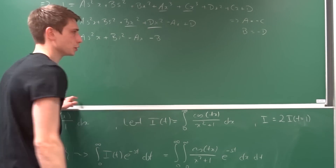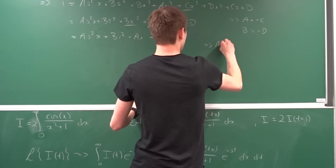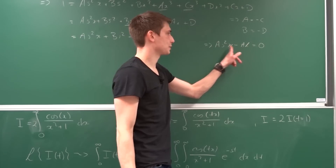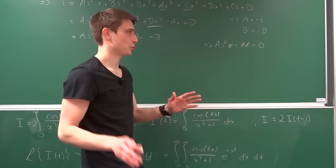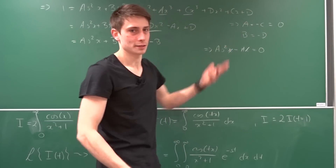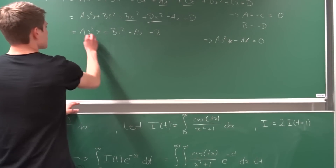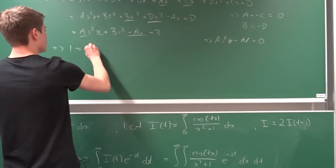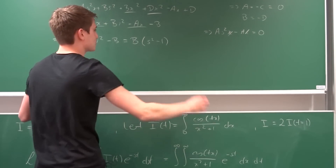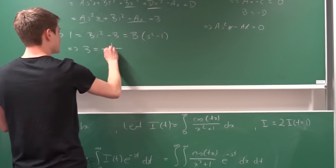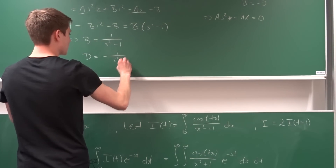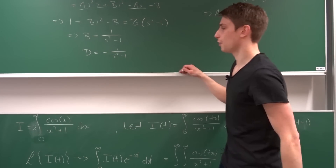The degree-one terms must equal zero: a·s squared·x minus a·x equals zero. Factoring out a: a times (s squared minus 1) equals zero, so a must be zero, and since a equals minus c, c is also zero. We're now left with one equals b·(s squared minus 1). Dividing both sides: b equals 1 over (s squared minus 1), and d equals minus b, so d equals minus 1 over (s squared minus 1). Now we can plug everything in.